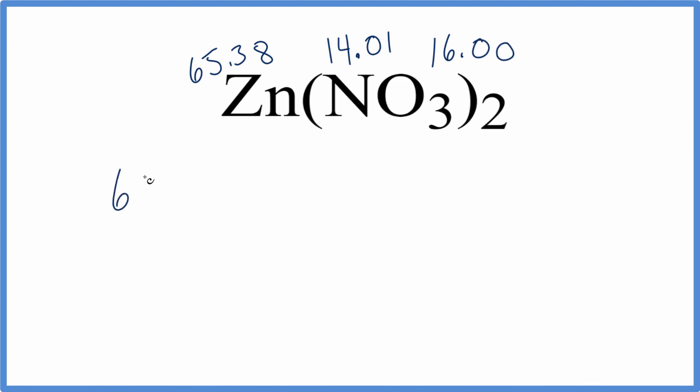So we'll take the zinc, the 65.38, and we'll add to that. Let's use our parentheses like we have in the formula here. Nitrogen 14.01 plus oxygen.